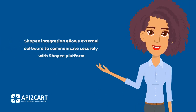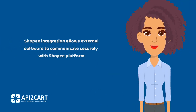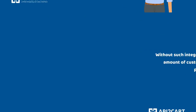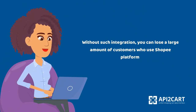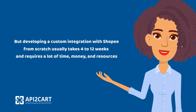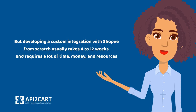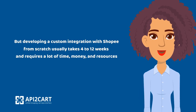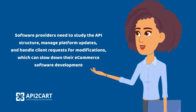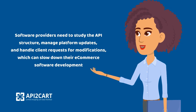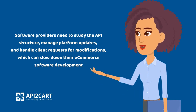Shopee integration allows external software to communicate securely with the Shopee platform. Without such integration, you can lose a large amount of customers who use the Shopee platform. But developing a custom integration with Shopee from scratch usually takes 4 to 12 weeks and requires a lot of time, money, and resources. Software providers need to study the API structure, manage platform updates, and handle client requests for modifications, which can slow down their e-commerce software development.